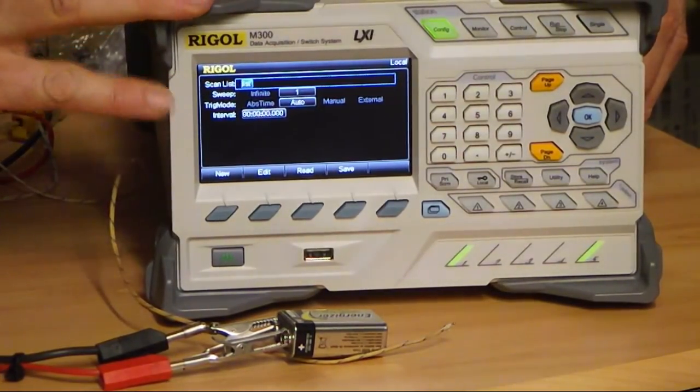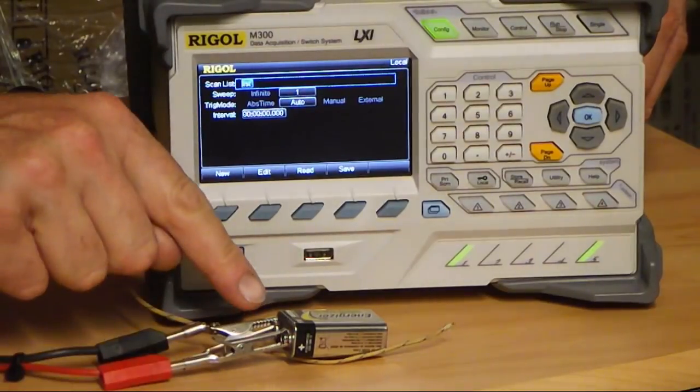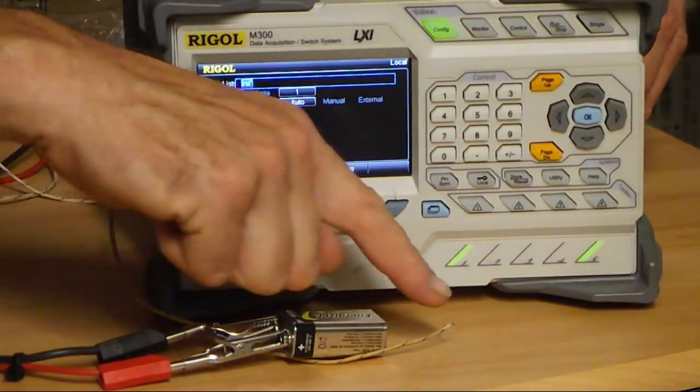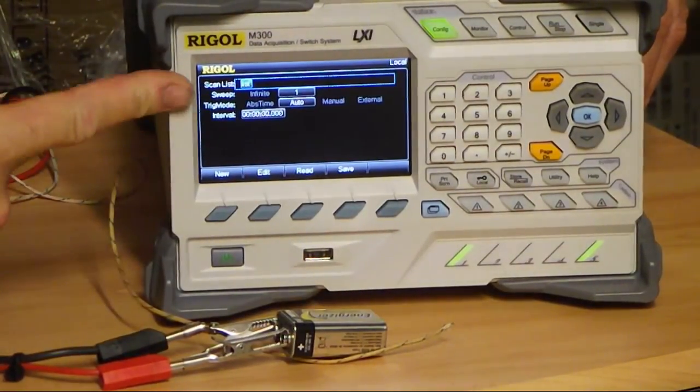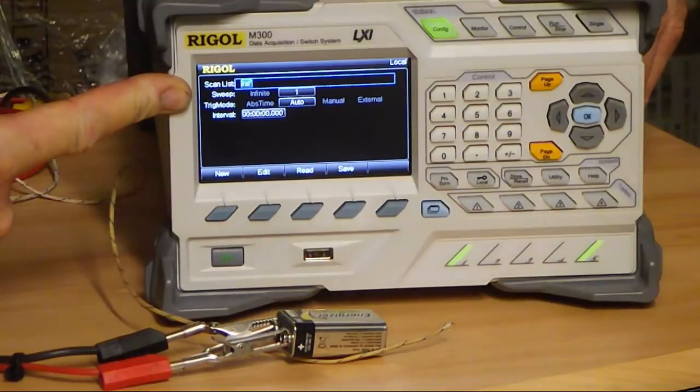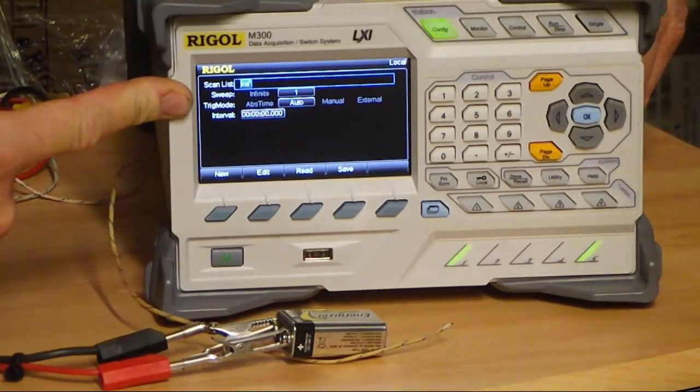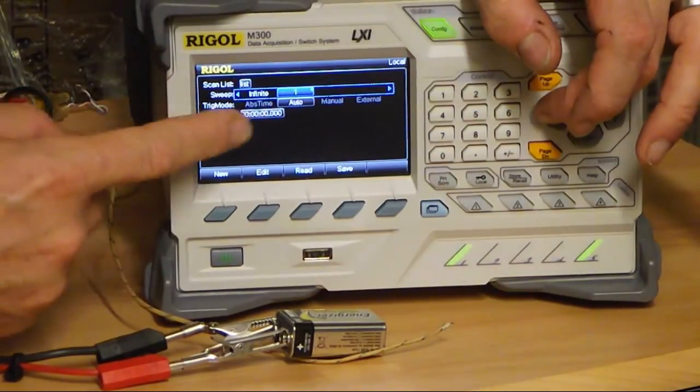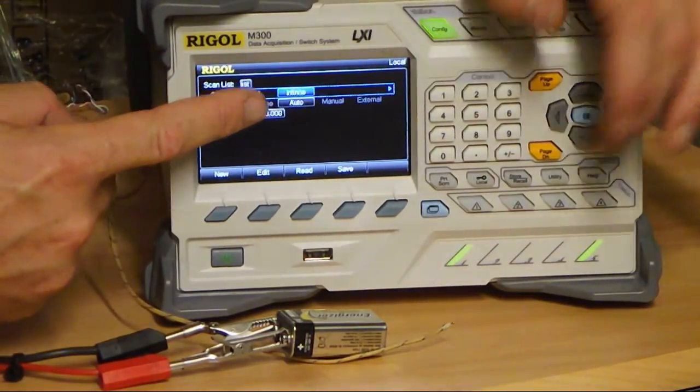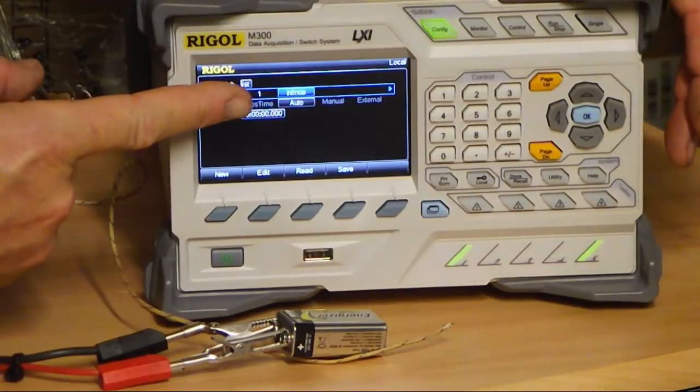And just to prove it, I've got the battery on the DC volts channel and this is the thermocouple. And what I'm going to do is to show you, this is what the scan list looks like on the front of the instrument. I'm going to set it so that there will be an infinite number of scans of those channels.